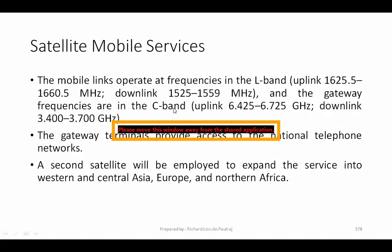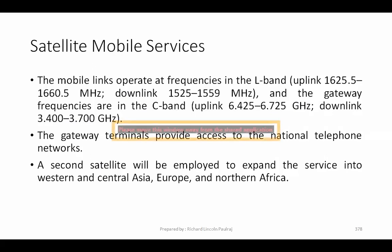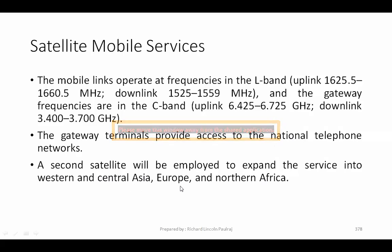So the gateway is utilizing C-band while mobile links use L-band. Gateway terminals provide access to national telephone networks, including toll-free emergency numbers. A second satellite will be employed to expand the service into western and central Asia, Europe, and northern Africa — this is how the bifurcation happens between frequency ranges and coverage regions.